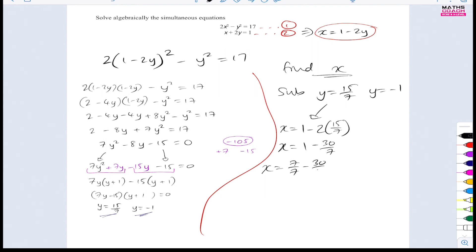So I can have the same denominator and then 30 over 7. And then that would be 7 minus 30, which is minus 23 over 7. So as a coordinate solution, we can have x as minus 23 over 7 and y was 15 over 7. So that's one of them.